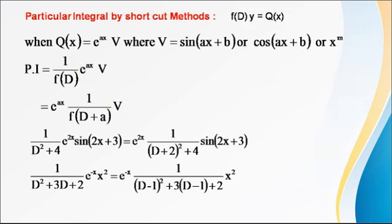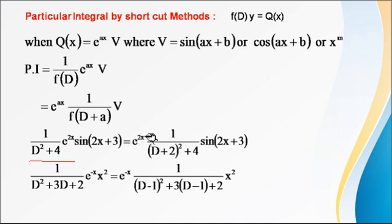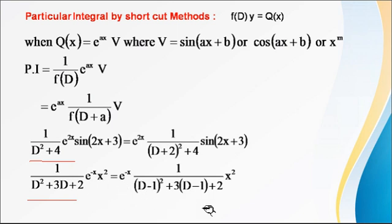See one example: 1/(D²+4) · e^(2x) · sin(2x+3). Move e^(2x) and replace D with D+2, since 2 is the coefficient of x in the exponential function. Similarly, in 1/(D²+3D+2), the coefficient of x is −1, so replace D with D−1 and simplify, continuing with the x^m method.